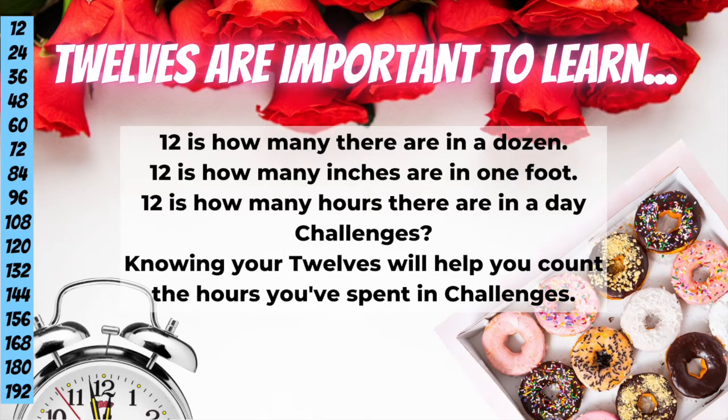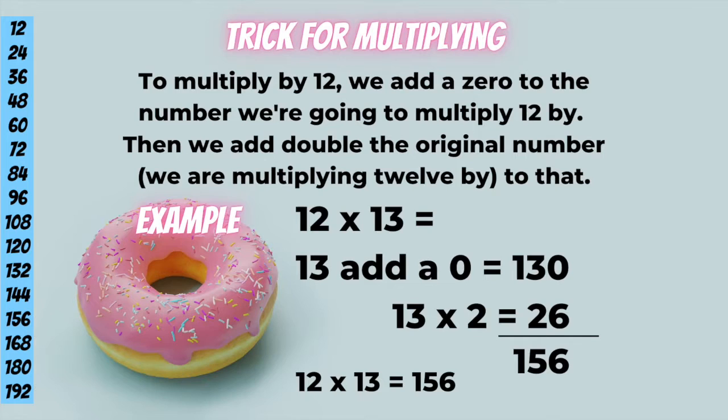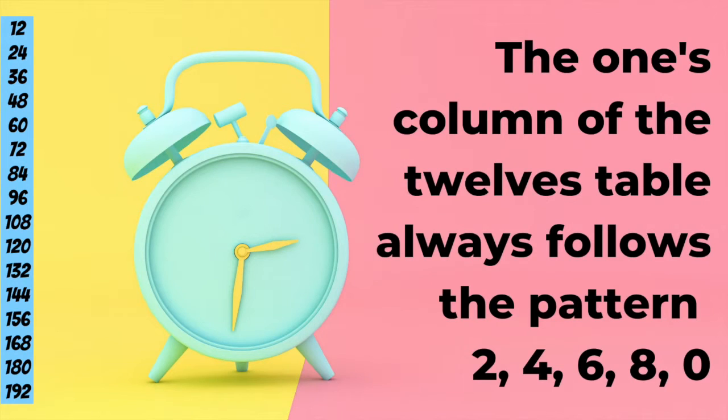So, the 12s, you should totally put to memory, but there is also a trick. Let's say you want to multiply 12 times 13. So, you add a zero to the number that you're multiplying 12 by. In our case, 13. So, you have 130. And then you double that 13, which is 26. And then you add those two numbers together, which is 156.